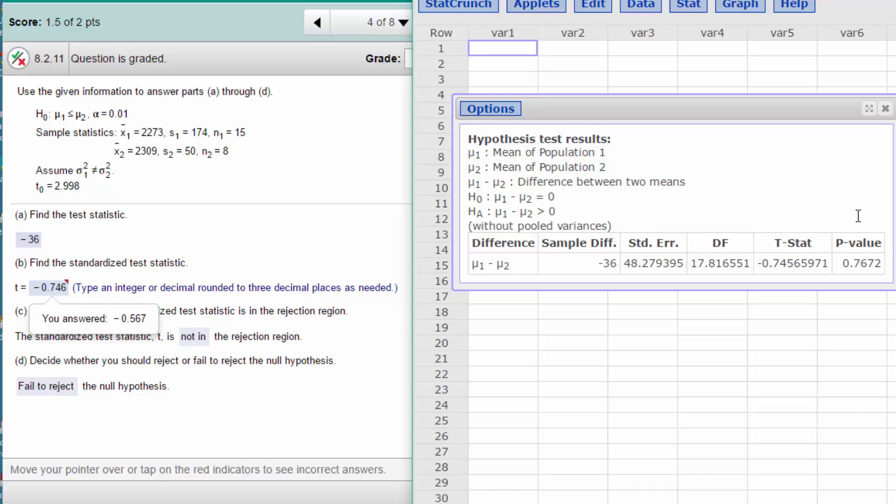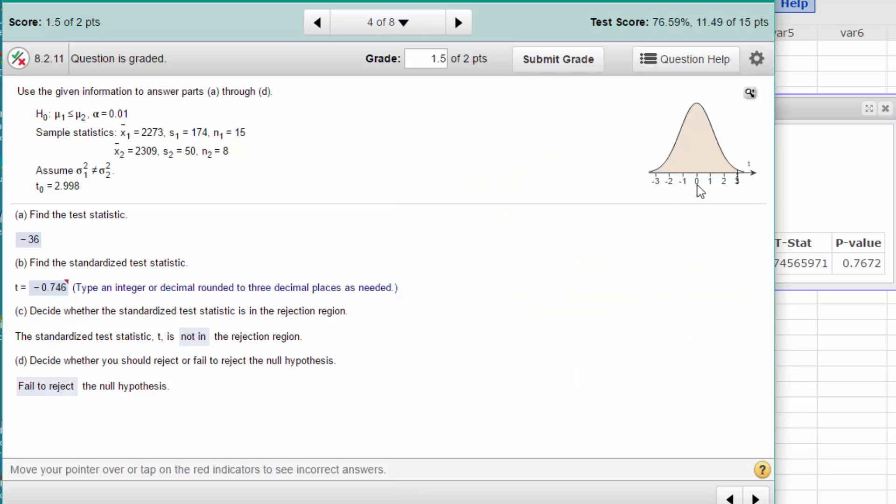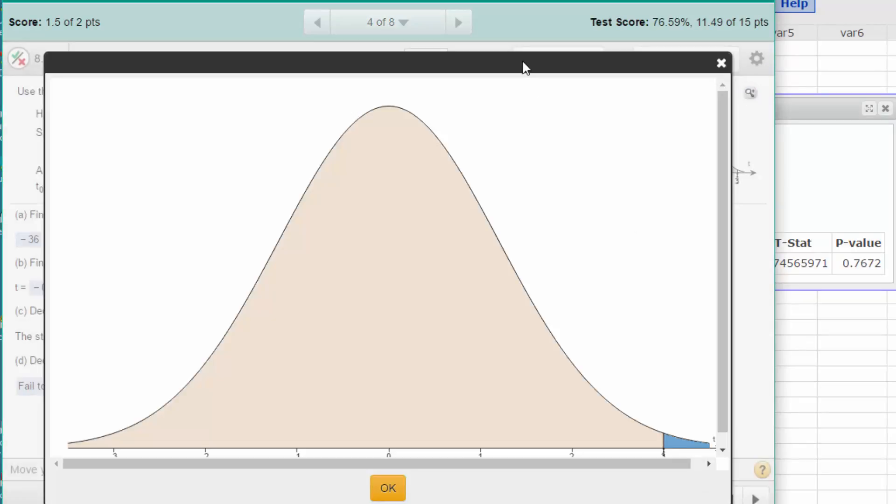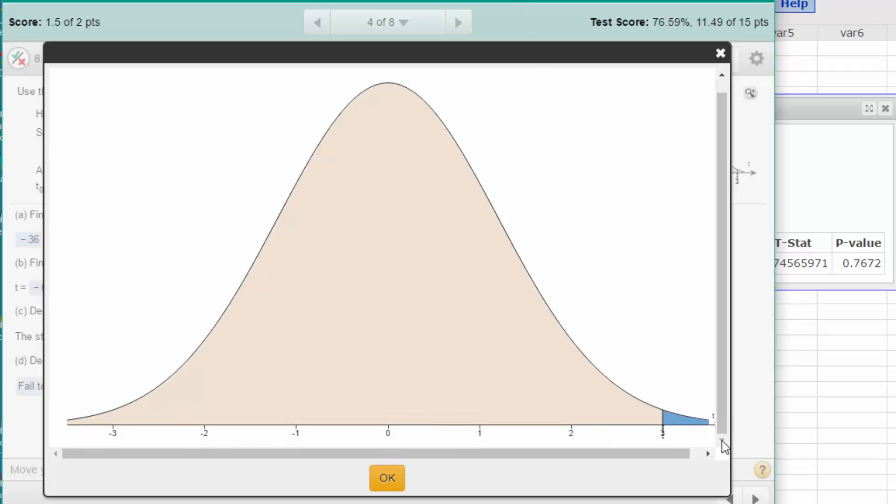But let's go ahead and look at whether or not the test statistic of minus 0.746 is in the rejection region. We go back and blow this curve up again.